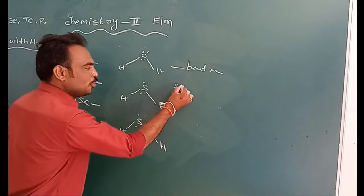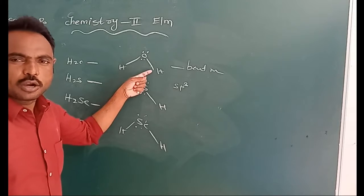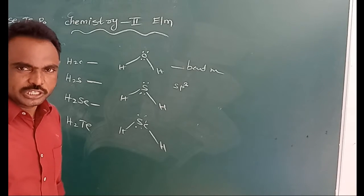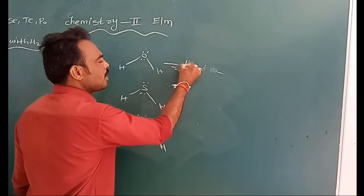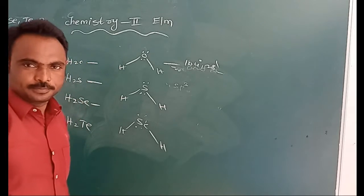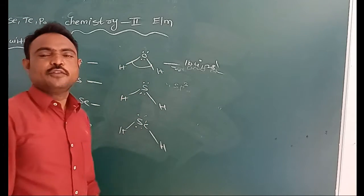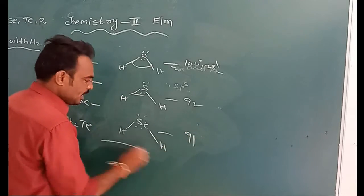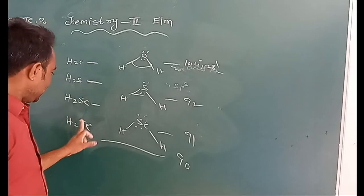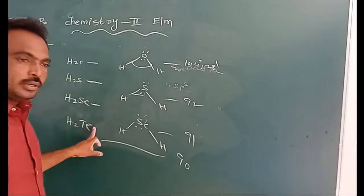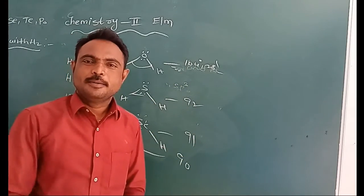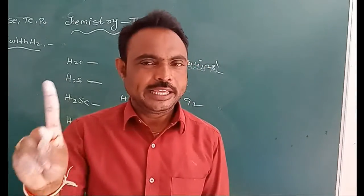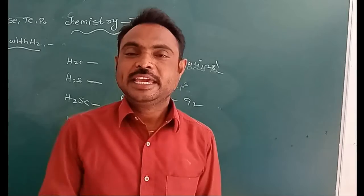Each compound has sp3 hybridization — H₂O is sp3 hybridized and so is H₂S. Water molecules have a bond angle of 104° 28', while H₂S has 92°, and the angle decreases further down to about 90° for H₂Te. From H₂O to H₂Te, the bond angle decreases due to increased repulsion according to VSEPR theory.